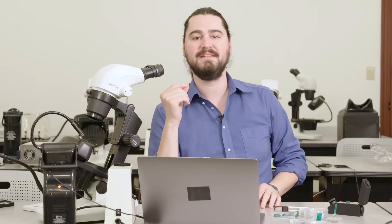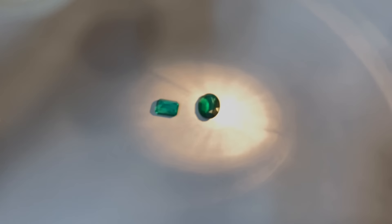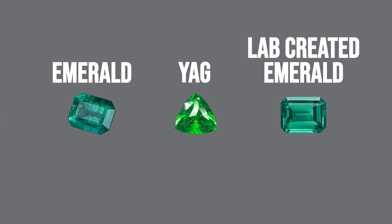It would be wrong of me to talk about identifying emeralds and not mentioning the Chelsea color filter. This filter was designed specifically to pick out emeralds from parcels of other green gemstones. The filter when passed over an emerald will make the emerald appear bright red if it's high in chromium content.